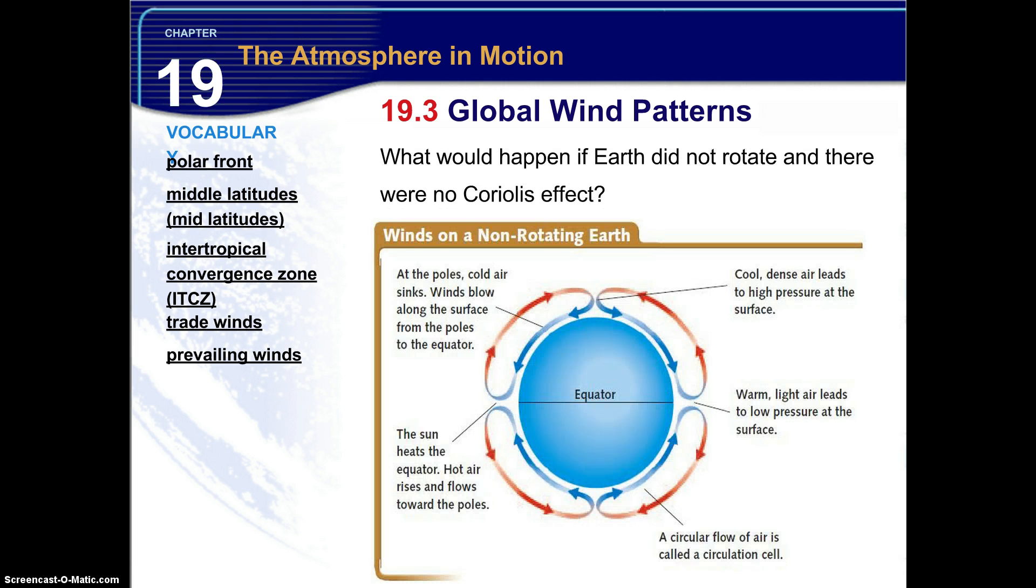First, I'd like to present a question to you. What would happen if Earth did not rotate and there were no Coriolis effect? Well, if we look at the winds, the winds at the poles, the cold air would just sink. And wind would blow along the surface from the poles to the equator, just as you see here in this circulation pattern. So it would heat up as it went to the equator. It would rise, come back to the pole, get cold, sink back down. And you can see how this would occur throughout the Earth.